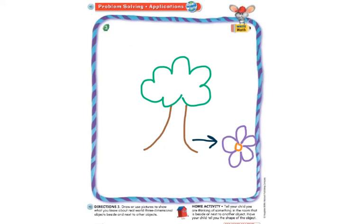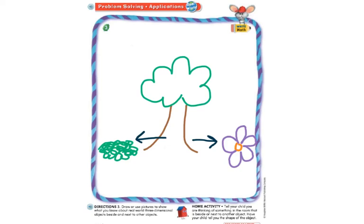Now I'd like you to draw a pile of leaves beside the tree. Remember, beside and next to mean the same thing, so drawing leaves beside the tree means drawing them next to the tree. I'm going to draw my leaves like little circles in a pile over here. Here is my tree, and next to the tree is a pile of leaves — or you can say, beside the tree is a pile of leaves.